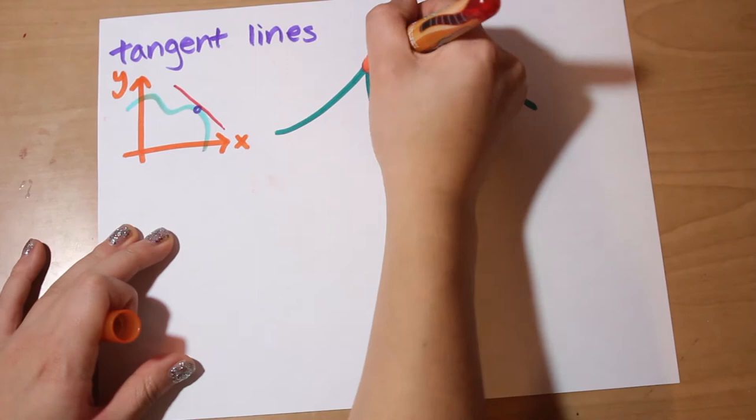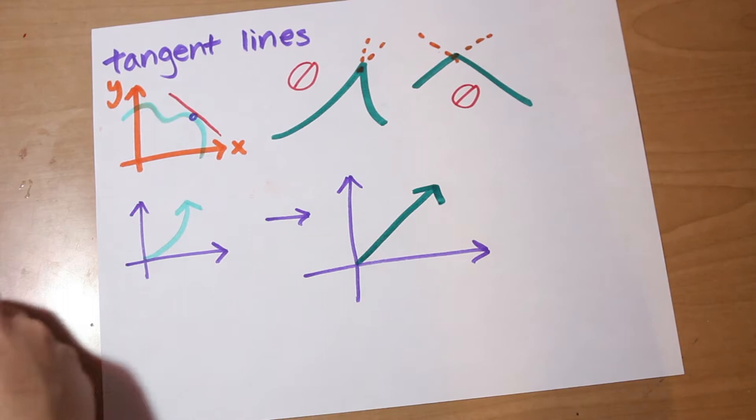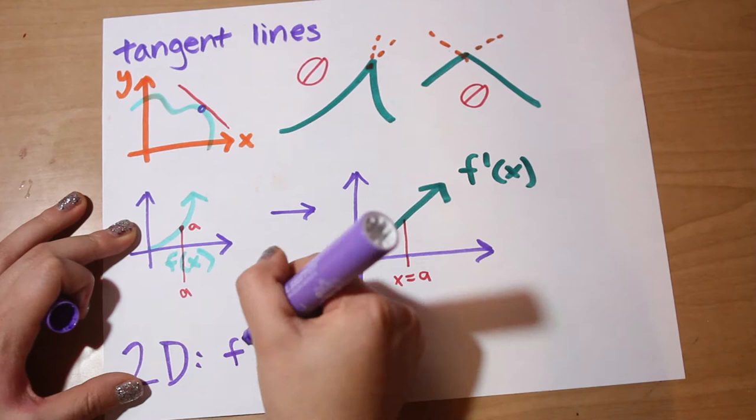And then you learned that derivatives were just the values of the slopes of these tangent lines. In technical terms, given a function f(x) that is differentiable at a given point a, you can approximate the function value to be about equal to f(a) plus the derivative at point a times (x minus a).